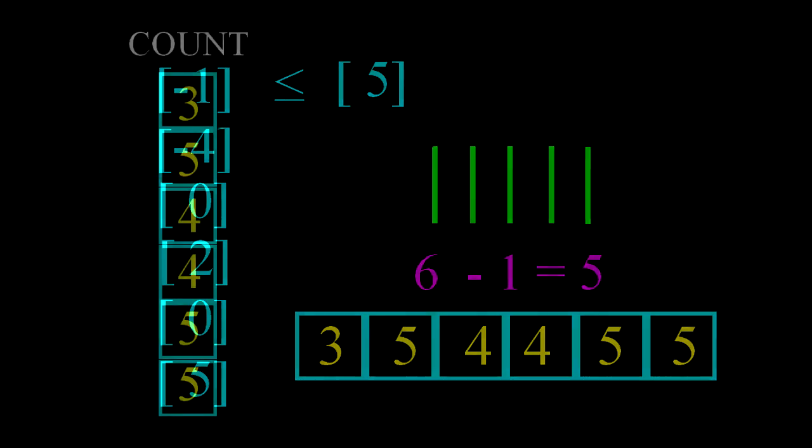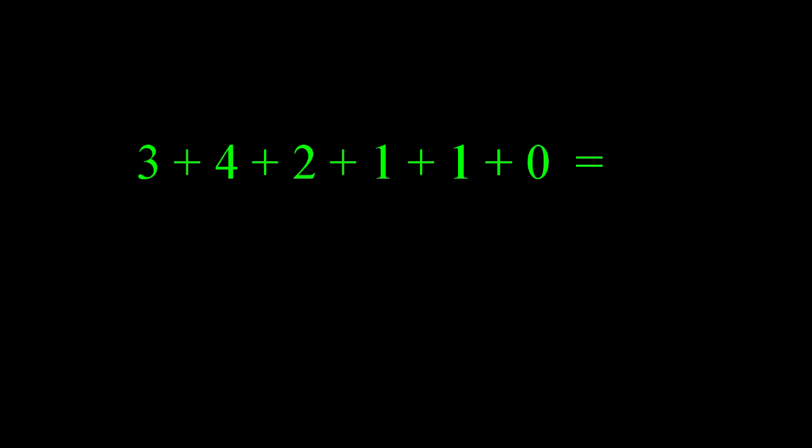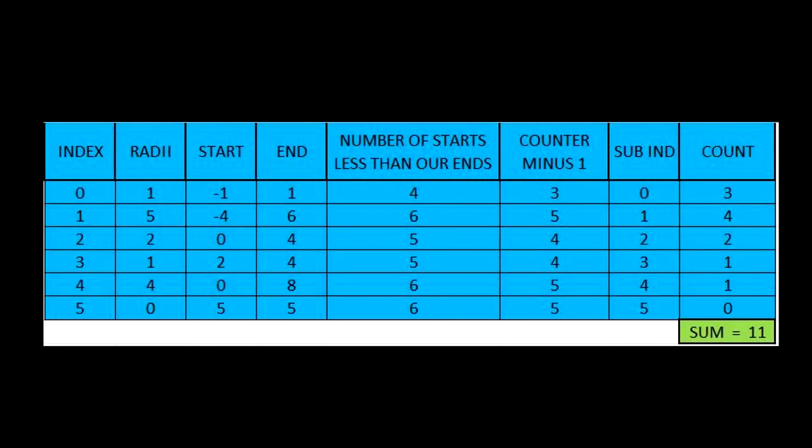Now that we have our count, all we need to do is subtract off our indices, and then calculate the sum. For further explanation, I created this spreadsheet here to hopefully shed a little light on what I just explained. We get our start points and end points from adding and subtracting our radii from our indices. Then we calculate our number of starts, less than our ends. Subtract 1 from each count, and then subtract our indices with a final action toward calculating the sum.